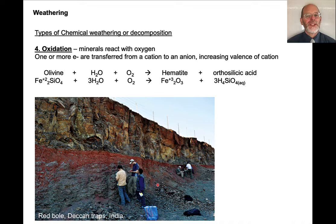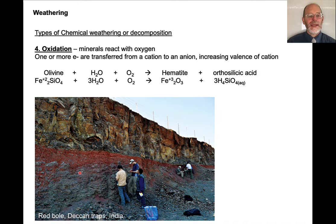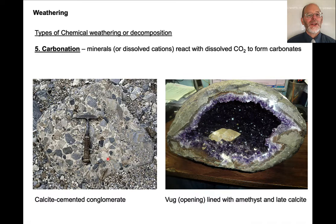Oxidation is when minerals react with oxygen — and also sometimes with water simultaneously. If we take olivine (fayalite) and react it with water and oxygen, we can form hematite, a new oxide mineral, plus silicic acid which is in solution and flows away. Here, for example, is a lava flow in India that has been weathered to form red oxides and oxyhydroxides. And then last, there can be carbonation: minerals can react with dissolved CO₂ to form carbonates, which is one way sedimentary rocks become cemented with calcite.